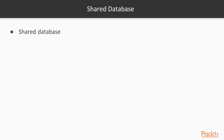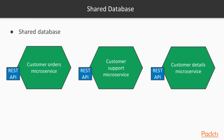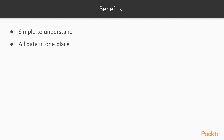The most common pattern is to have a shared database used by different services. In this example we have a service for customer orders, customer support, and customer details, that all share a single database. The benefits are that it is simple to understand and all the data is in one place. SQL is really efficient at doing join or group by queries on this shared customer data store.